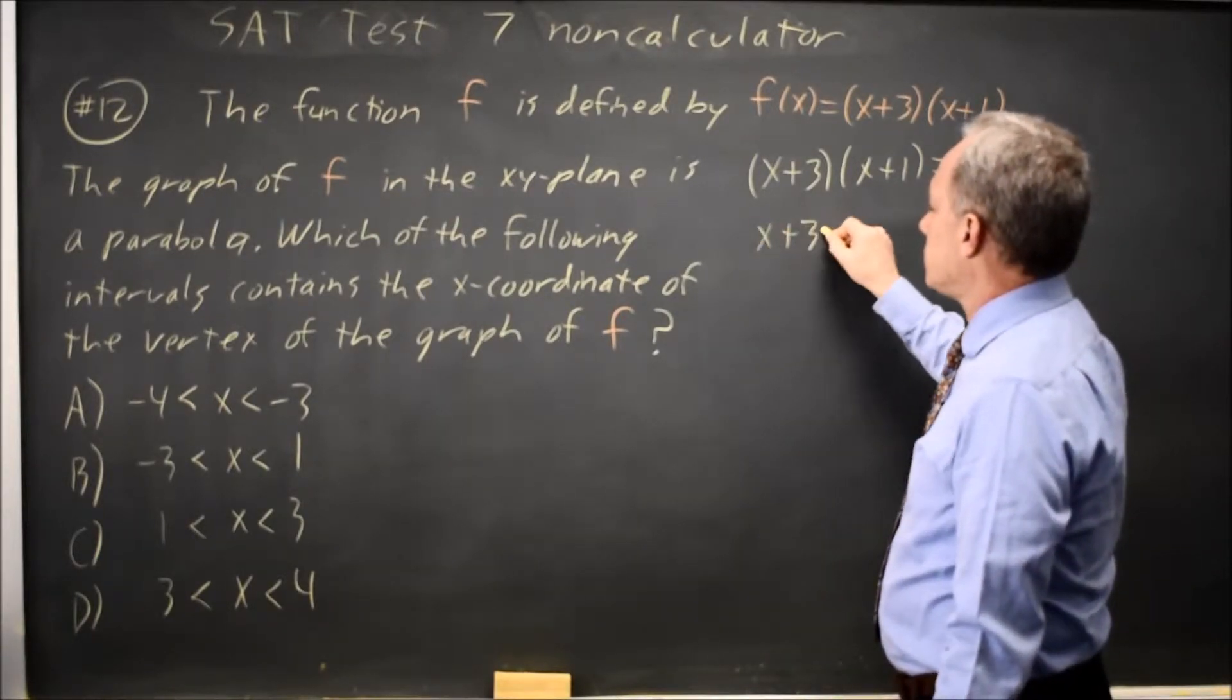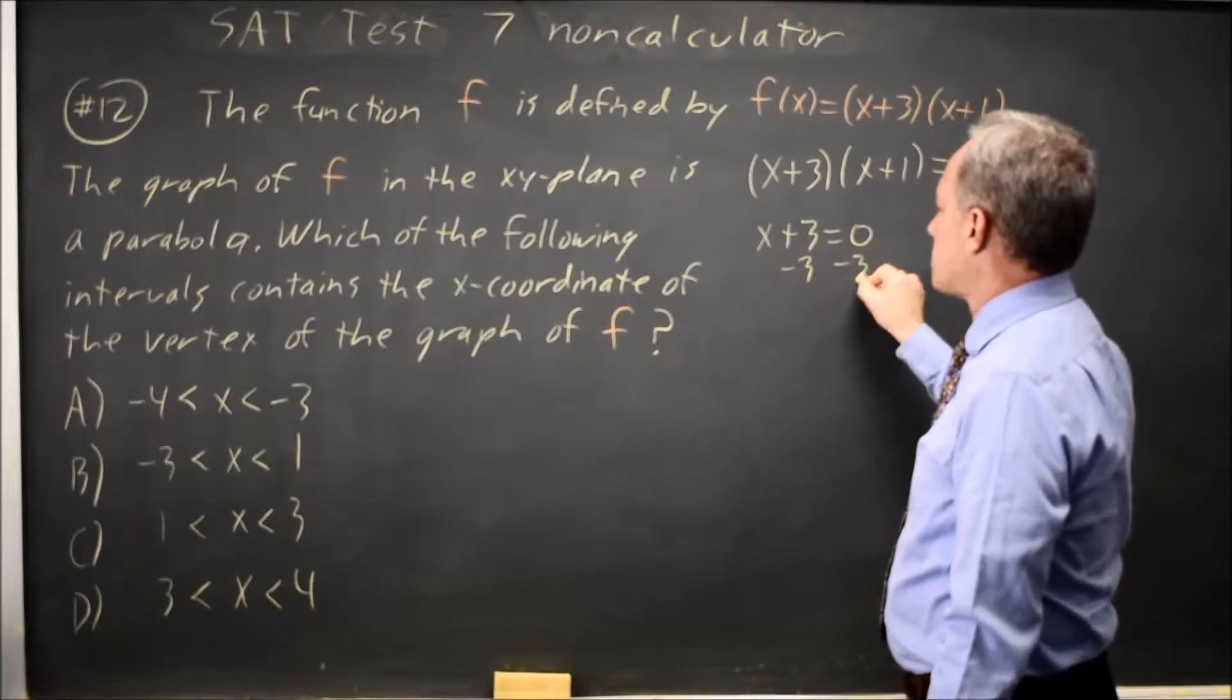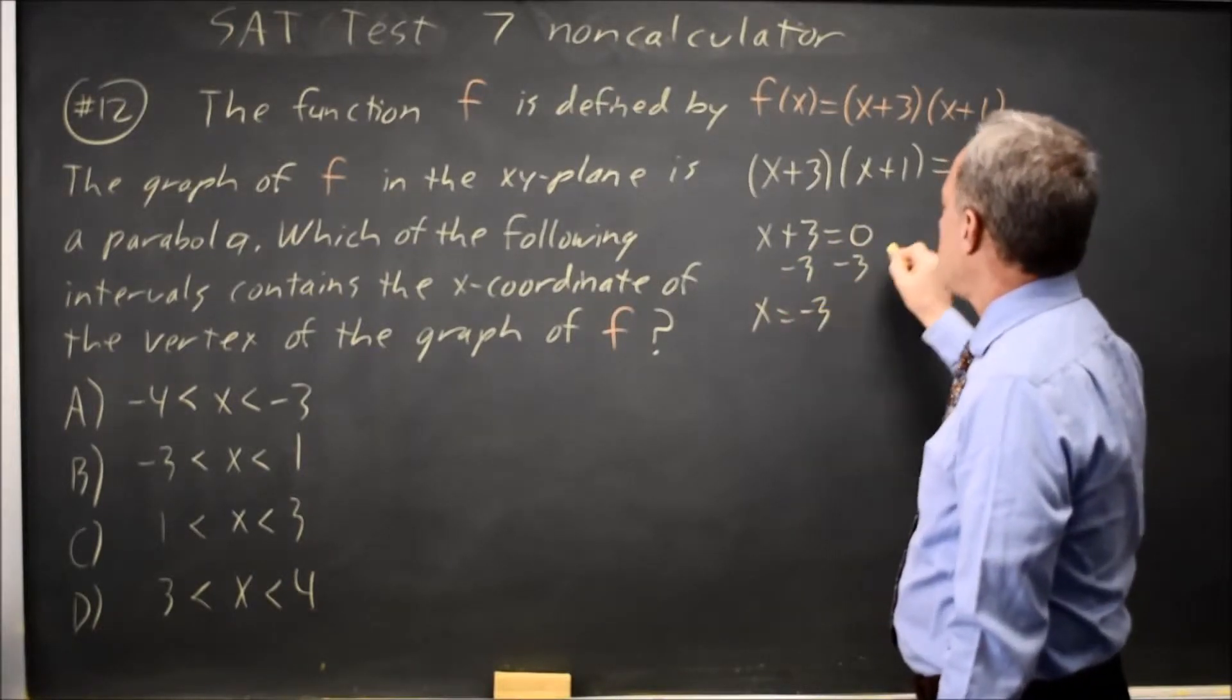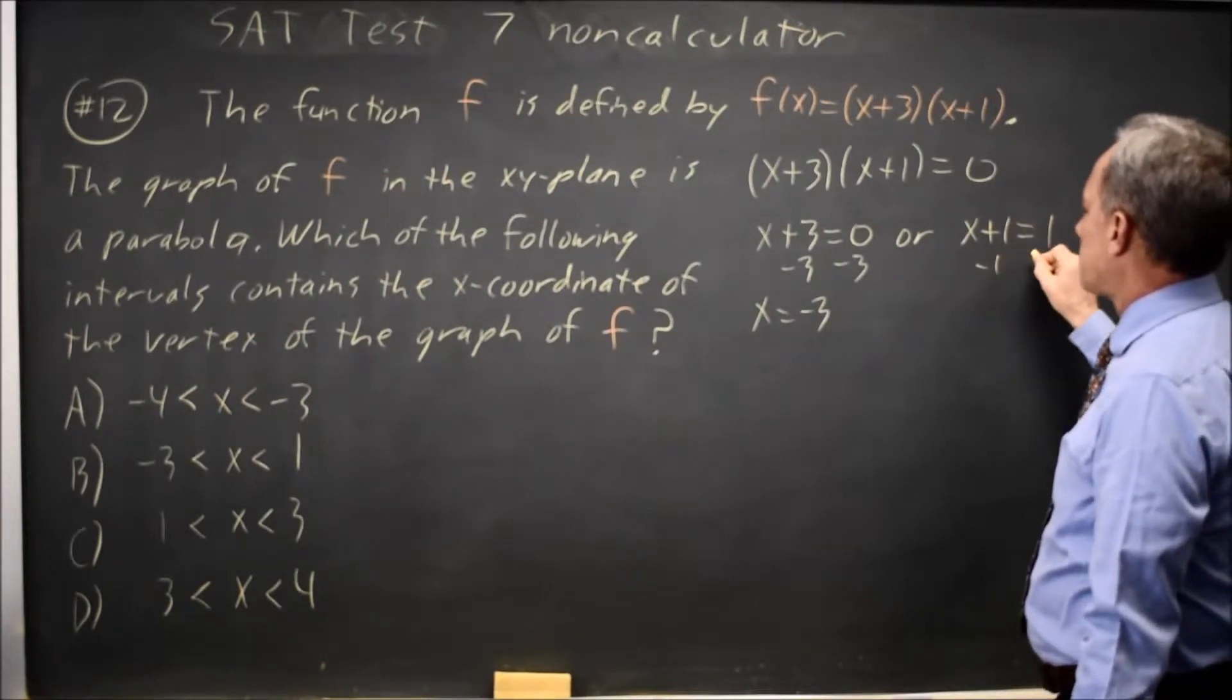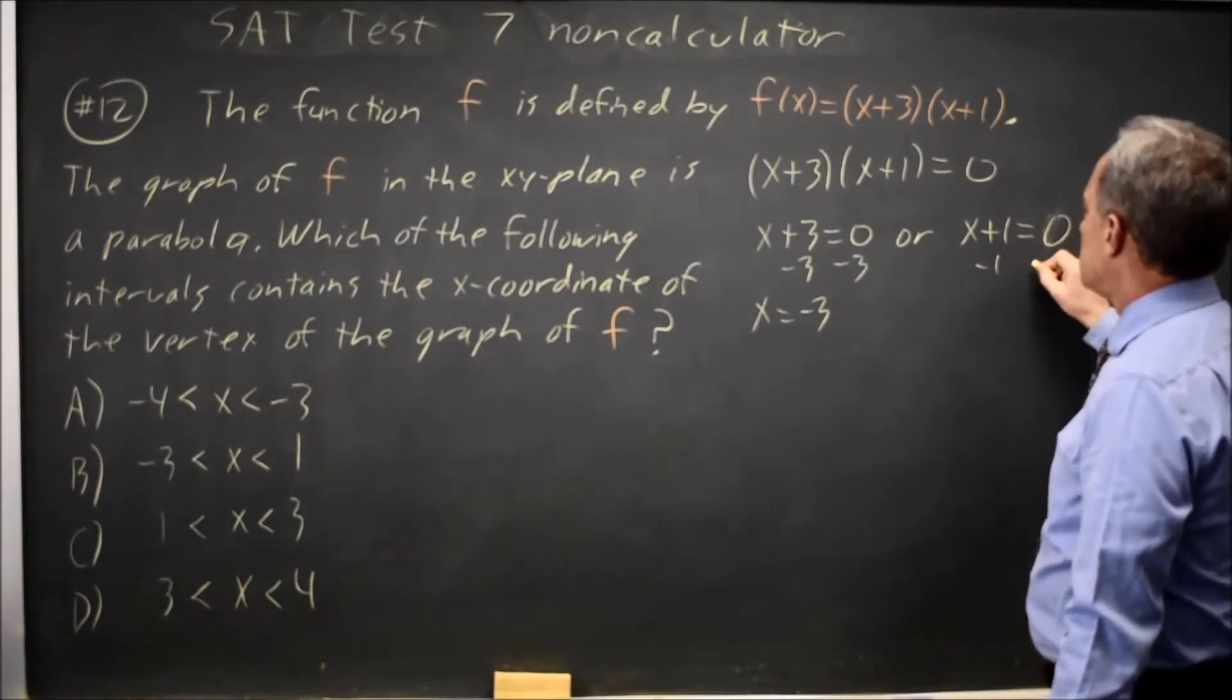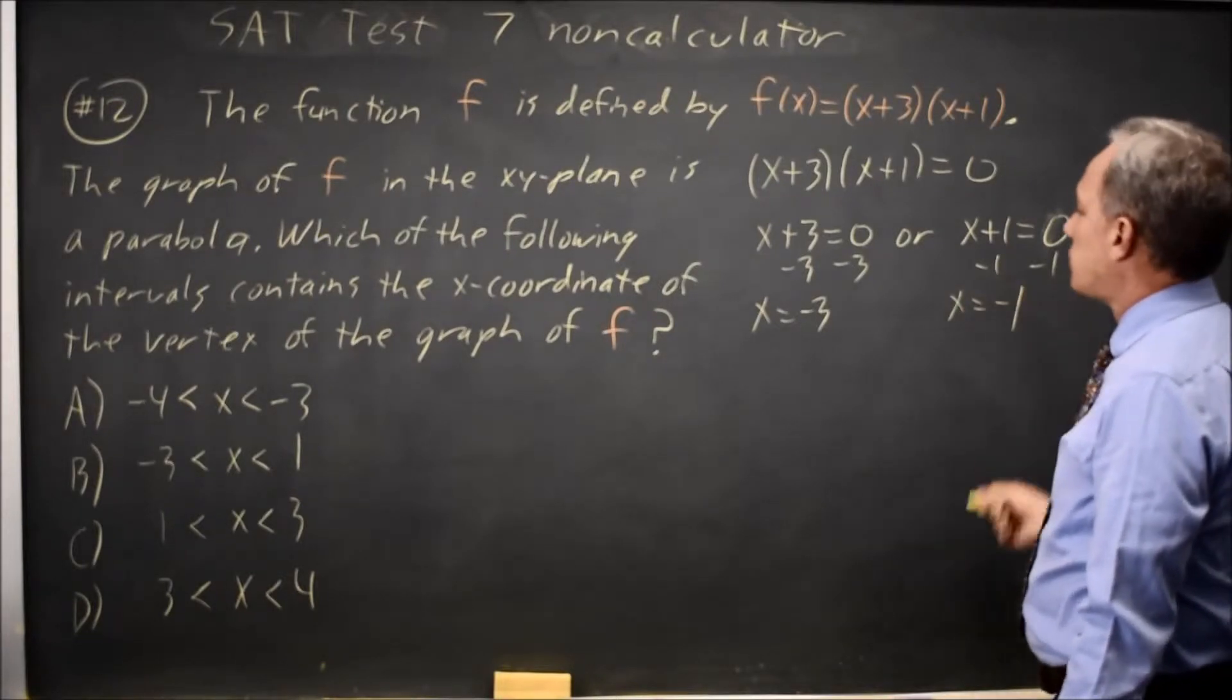either the first factor is 0, subtract 3 from both sides and you get x equals negative 3, or the second factor is 0, x plus 1 equals 0, subtract 1 from both sides, x equals negative 1.